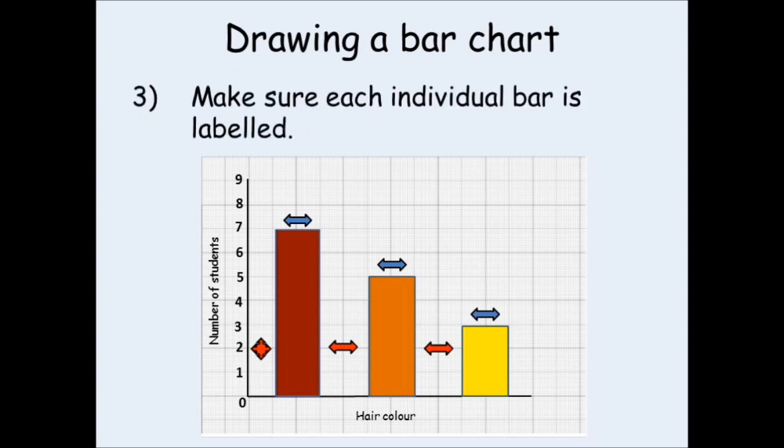Now, once you've drawn your bars and you've got all the spacings correct, you need to label each individual bar. Now, in this example, I've put the labels on the bar itself. This is not the only way to do it. The labels could also be below the bars, below the x-axis.